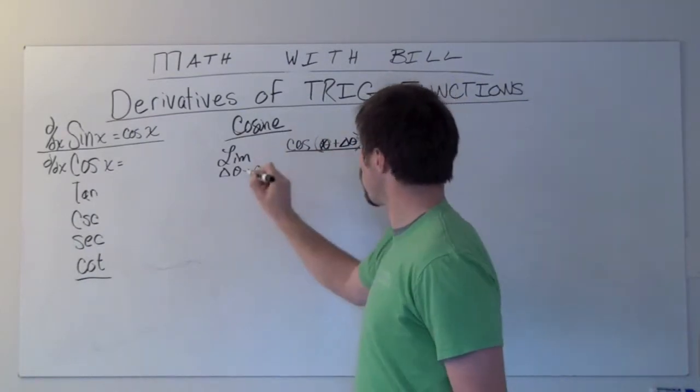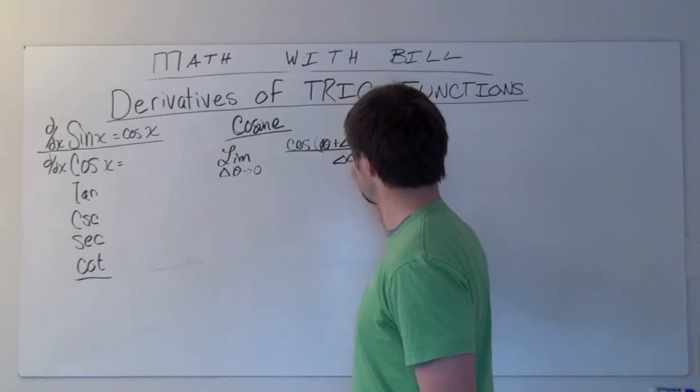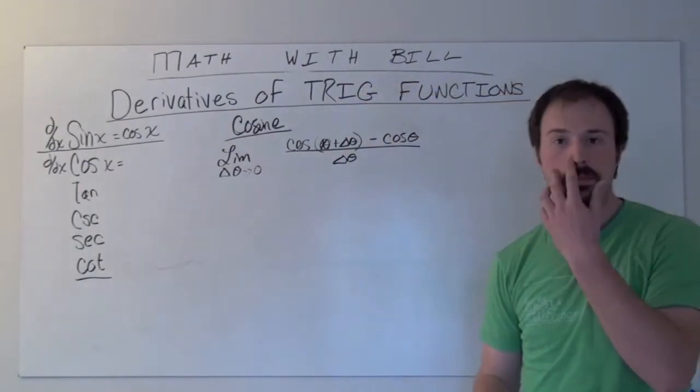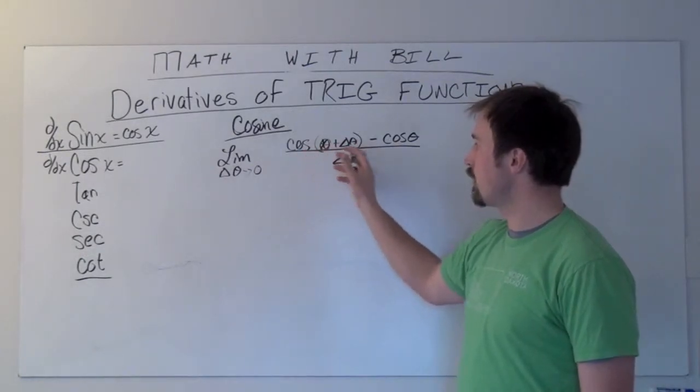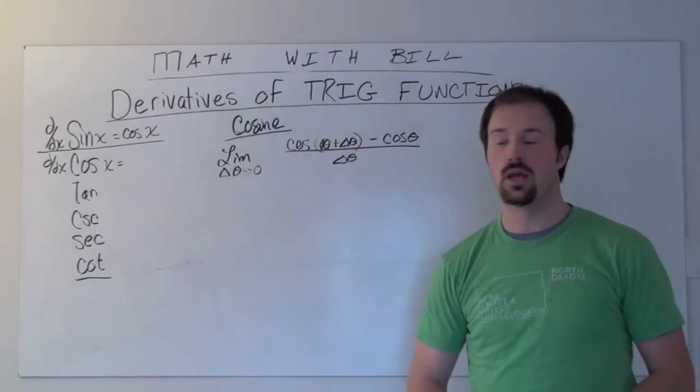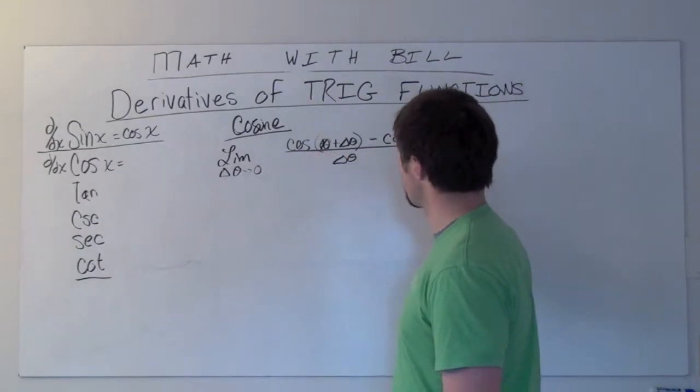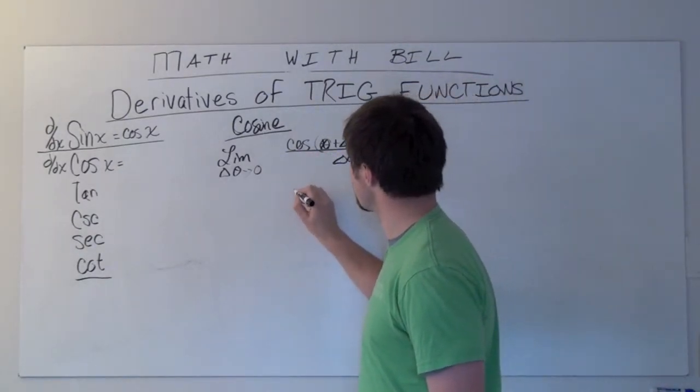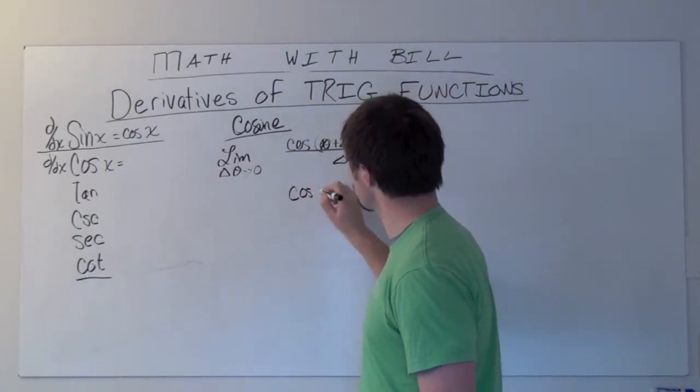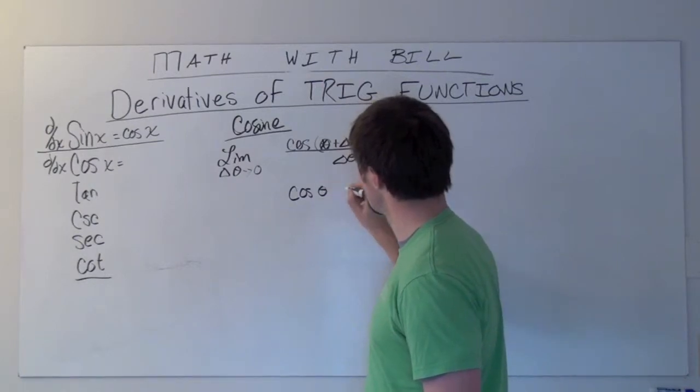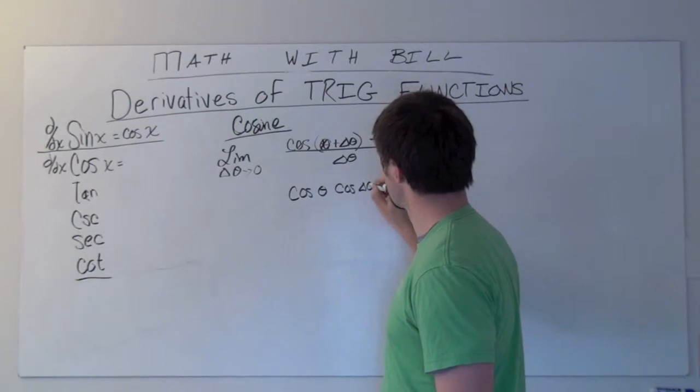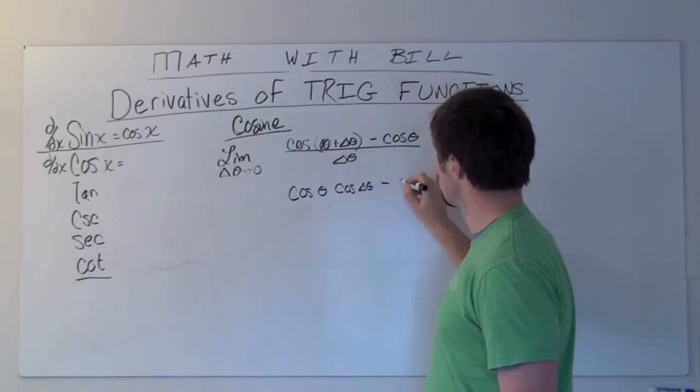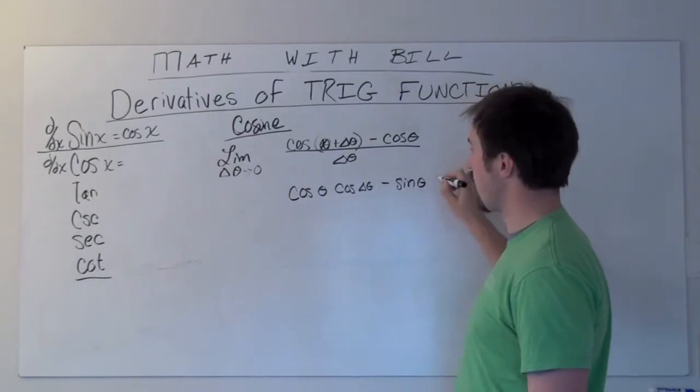What we need to do first is expand out this sum of angles for cosine. Our sum of angles formula for cosine is: cosine of the first times cosine of the second, minus sine of the first times sine of the second.